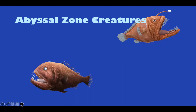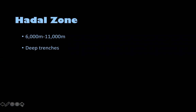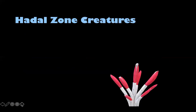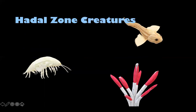The last zone is the hadal zone, which goes from 6,000 to 11,000 meters, and this includes deep trenches — all of the ocean's deep trenches are in the hadal zone. More people have been to the moon than have been to the hadal zone, so very few people have ever seen it. There are not many living things down here because of the complete darkness, extreme freezing temperatures, and very high pressures. The few creatures that can survive include tube worms, snailfish, and amphipods of all kinds.